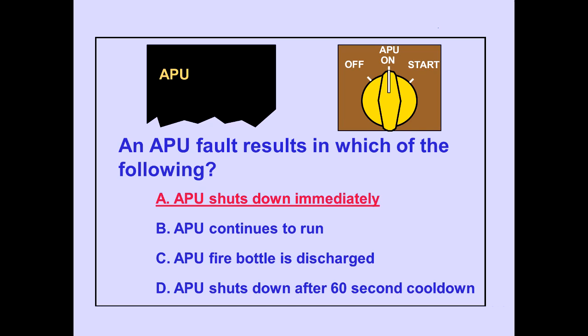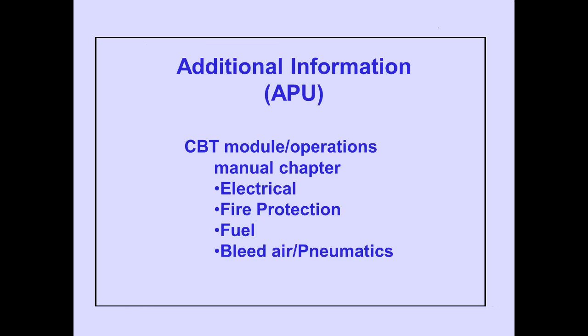Answer A is correct. Additional APU systems information can be found in AVT modules and operations manual chapters dealing with electrical, fire protection, fuel, and bleed air pneumatics.